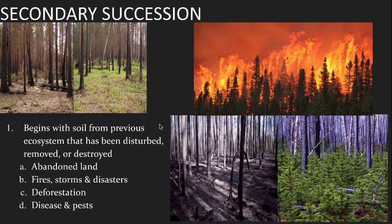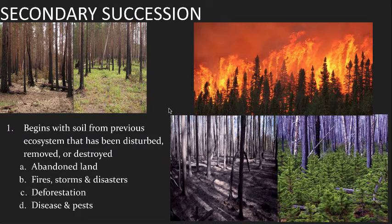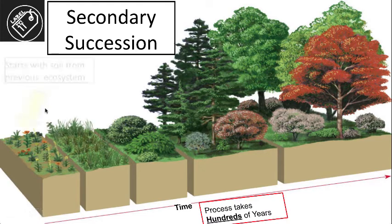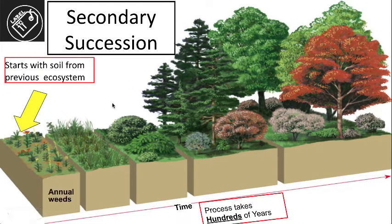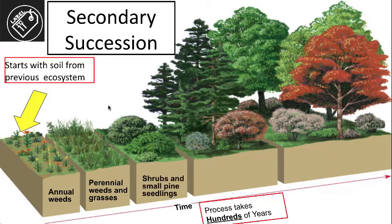Secondary succession is a little faster — it's a shortcut. It begins with soil from a previous ecosystem that has been removed or disturbed in some way, such as abandoned land, fires, storms, disasters, deforestation, disease spread, or pests — essentially wiping out the ecosystem but keeping the soil in place. The ecosystem is then able to bounce back and rebuild. Starting with soil from the previous ecosystem, weeds and grasses can start to grow right away, and perennial grasses that come back year to year and build deeper root systems come in quicker. This process takes hundreds of years — a jump start because we don't need to wait for soil to be built.